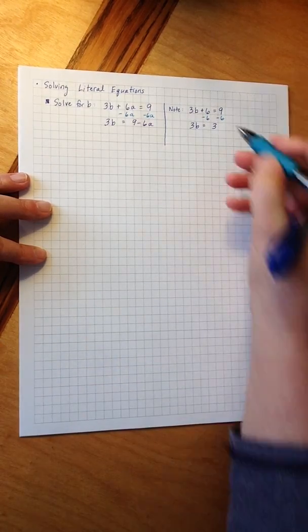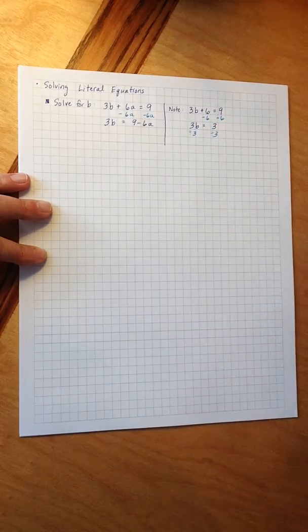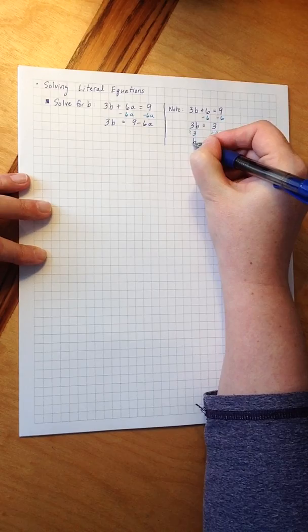In our related equation, our next step is going to be to undo the multiplication, and I do that by dividing. I get b equals 1.